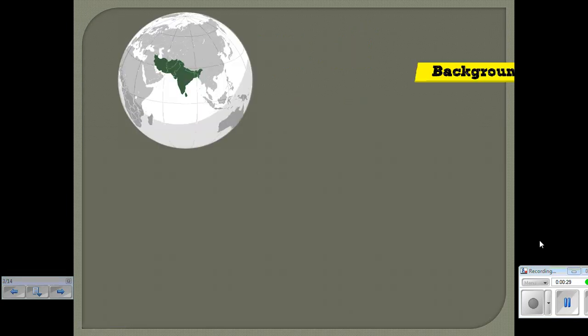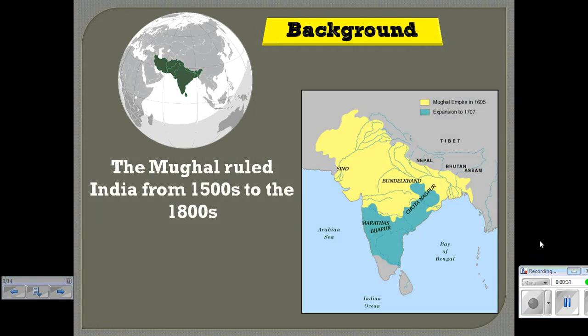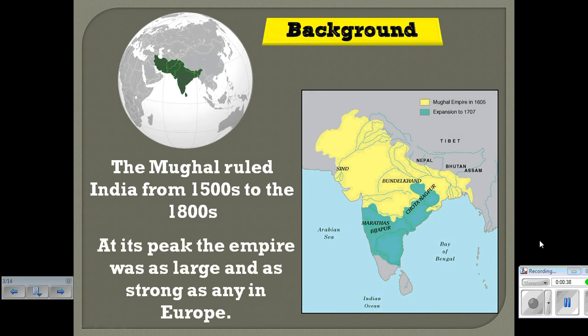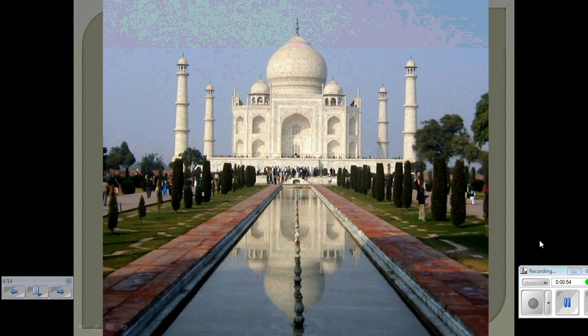Alright, a little bit of background information on India. It was originally ruled by the Mughal Empire, and they reigned for a very long time — from the 1500s to the 1800s. At their peak they were just as large and just as powerful as any European nation. So the question we ask ourselves is: what happened that allowed them to be taken over by the Europeans? It's also worth mentioning that during this time period they built one of the greatest world monuments, the Taj Mahal.